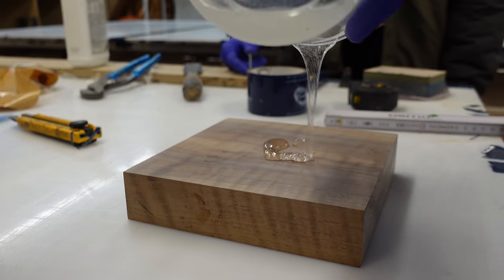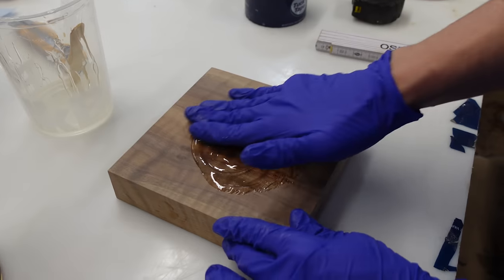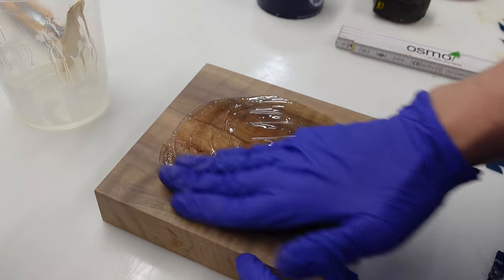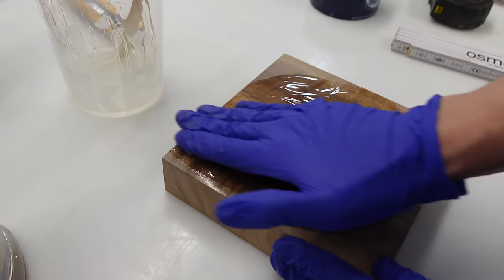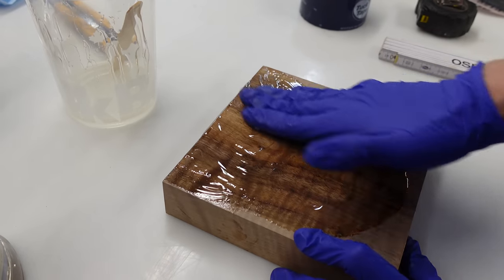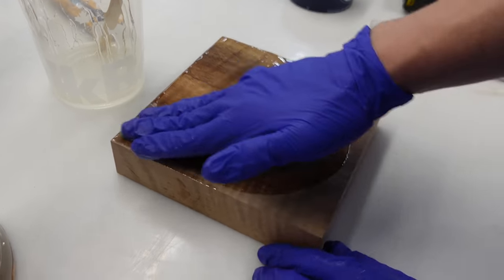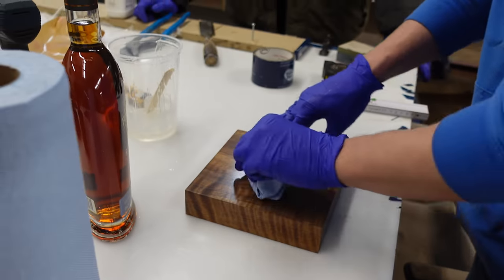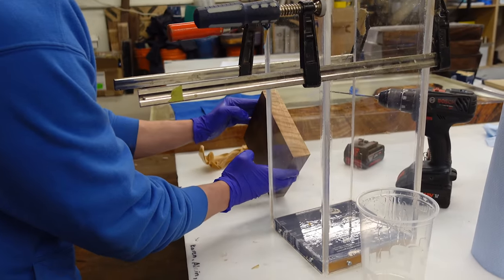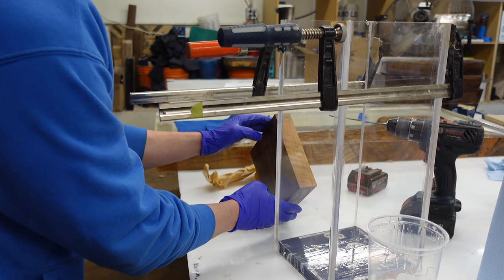To seal this, we literally just pour it on, rub it in, and then I don't want to leave a whole bunch of excess on here, so after I rub it in, I'm actually just going to take one of those blue shop towels and buff all the excess off. This is all done, and we're just going to leave it to dry.